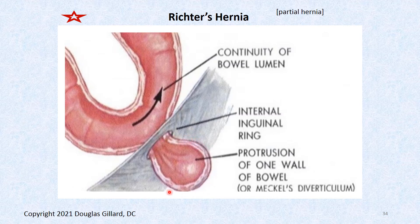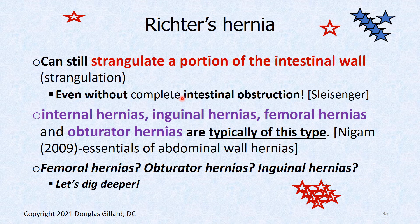It can become ischemic, abscessed, and the pus can drain back through the orifice into the peritoneal cavity and cause peritonitis. Internal hernias, inguinal hernias, femoral hernias, and obturator hernias are typically Richter hernias. That's a good question — I could easily make a question: which one of the following is not likely to form a Richter hernia? So you'd have to know which ones are at risk for forming a Richter hernia.